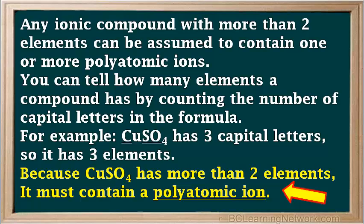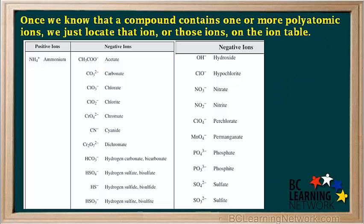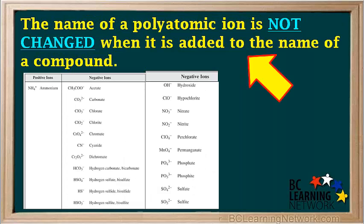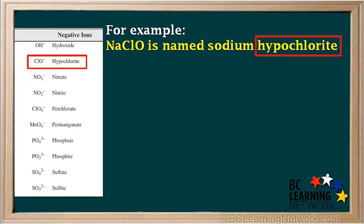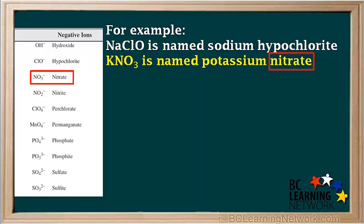Because CuSO4 has more than two elements, it must contain a polyatomic ion. Once we know that a compound contains one or more polyatomic ions, we just locate that ion on the ion table. When naming binary compounds, the name of the non-metal had to be changed to end in IDE. But when a polyatomic ion is in a compound, the name of the polyatomic ion is not changed in any way. For example, the polyatomic ion ClO⁻ is called hypochlorite, so NaClO is named sodium hypochlorite. The polyatomic ion NO3⁻ is called nitrate, so KNO3 is named potassium nitrate. Notice no changes in the names of the polyatomic ions.